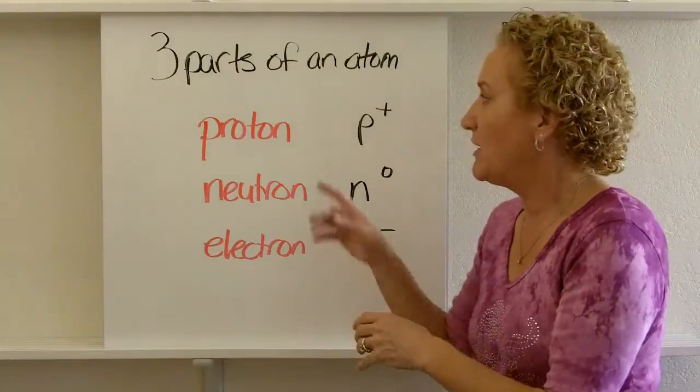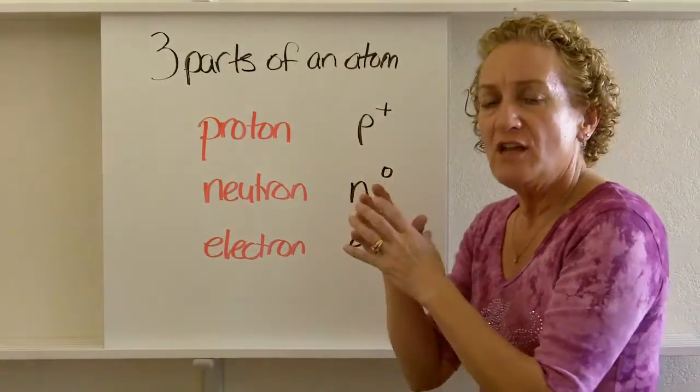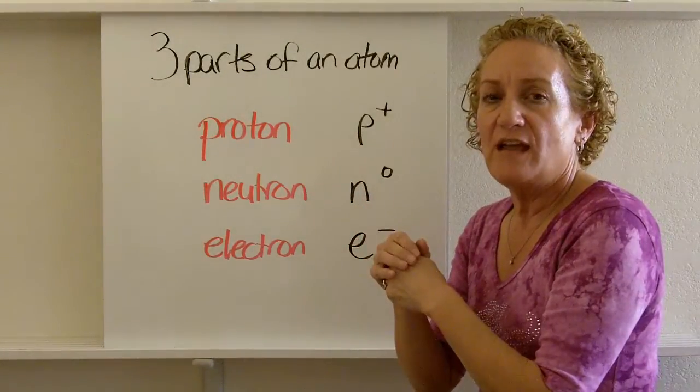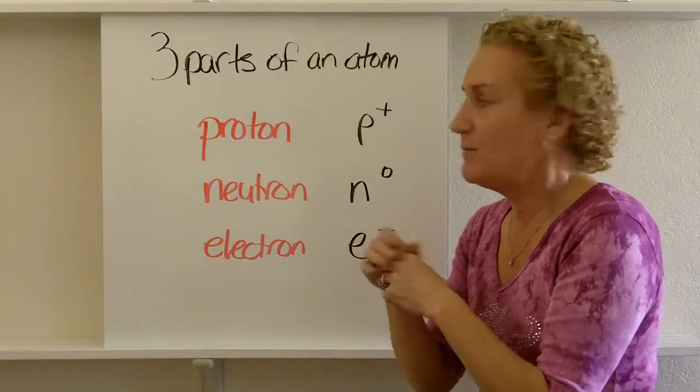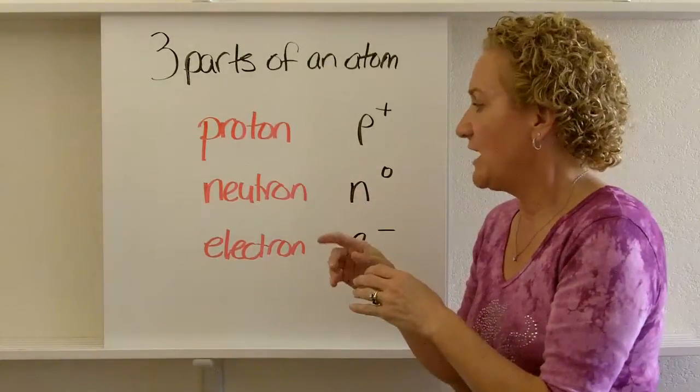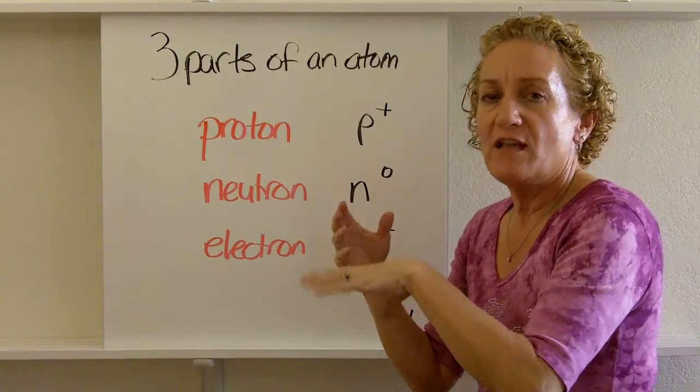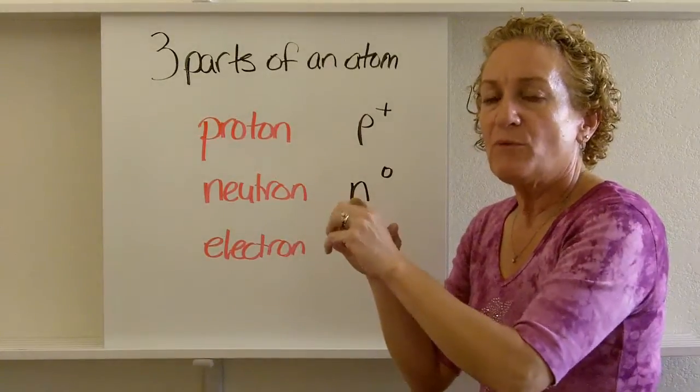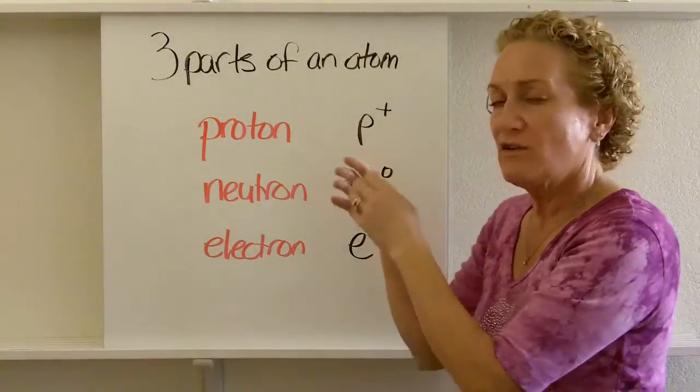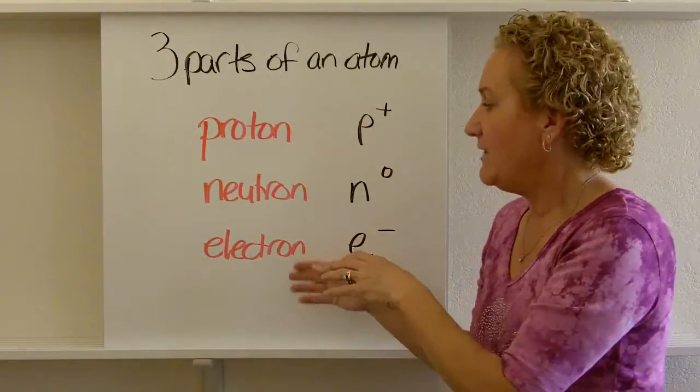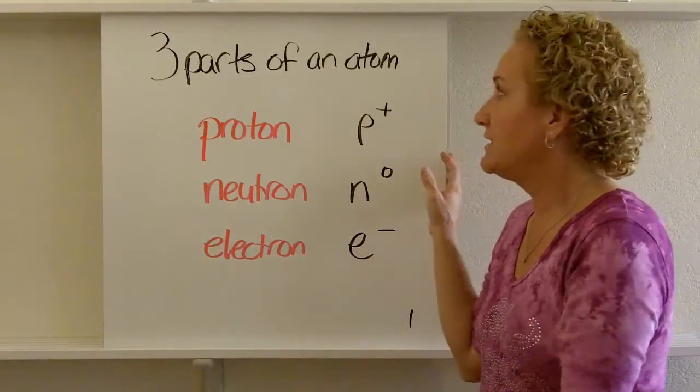Where do they reside? Well, it depends on what particle you're talking about. Both the protons and the neutrons reside in the nucleus of an atom, in the center section. Electrons are around the outside of the nucleus. We'll get into exactly where they are later. But for right now, you need to know that protons and neutrons are on the inside, in the nucleus, and the electrons are around the nucleus.